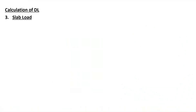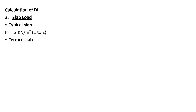First of all, coming to the slab load. For a typical slab, as per IS 875 part 1, you can consider floor finish value anywhere between 1 to 2 kN per meter square. To be on the conservative side, we are assuming 2 kN per meter square. For the terrace slab, in addition to floor finish, we will also have a waterproofing value of 0.75, so this will sum up to 2.75 kN per meter square.